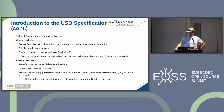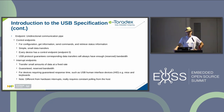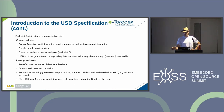Endpoints are unidirectional communication pipes where data actually flows. There is always a control endpoint for configuration — to get information, send commands, or retrieve status. It's only suitable for simple, small data transfers. Every device has control endpoint zero, and the USB protocol guarantees that these transfers will always have enough bandwidth to go through.